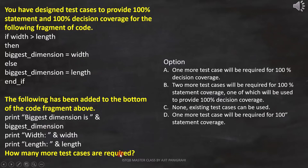These are the options. Option A: one more test case will be required for 100% decision coverage. Option B: two more test cases will be required for 100% statement coverage. Option D: one more test case will be required for 100% statement coverage.